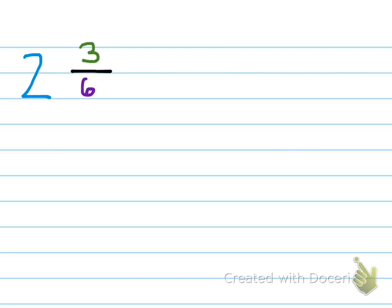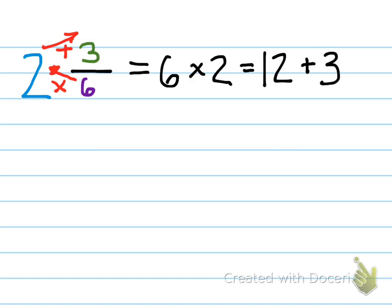Let's try another one. Two and three-sixths. Now, you're going to multiply the denominator and the whole number. Then, you're going to add the numerator. So, first, you're going to do six times two, and that's twelve. And then, you're going to add three, which is fifteen. Denominator stays the same. It's six.